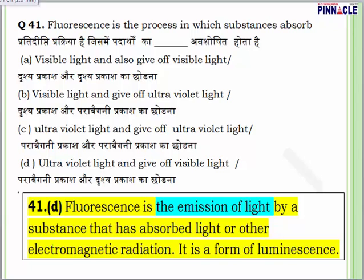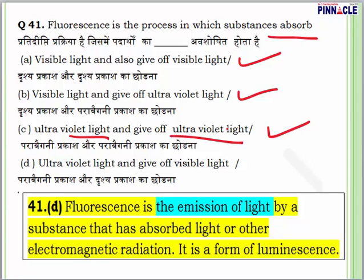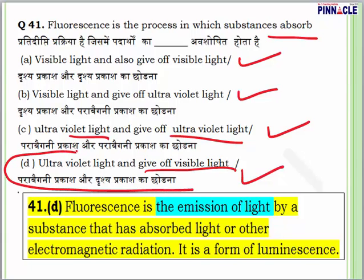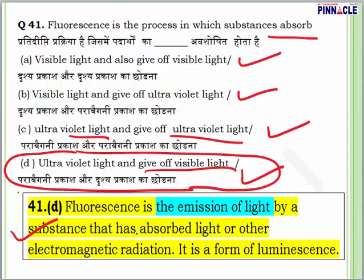Question 41: Fluorescence is the process in which substances absorb what? Options involve combinations of visible and ultraviolet light absorption and emission. In fluorescence, ultraviolet light is absorbed and visible light is given off. Fluorescence is the emission of light by a substance that has absorbed light or other electromagnetic radiation — it is a form of luminescence. Answer is D.